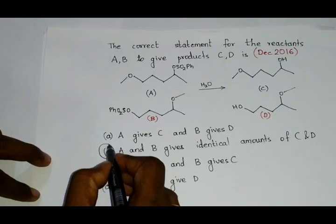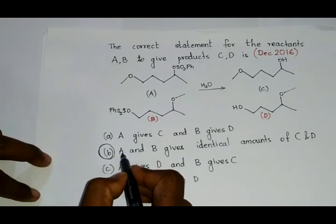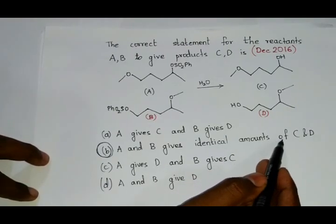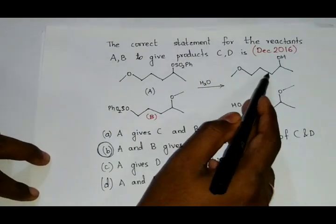So option B, which states that A and B, that is both the reactants, gives identical amounts of C and D, is correct.